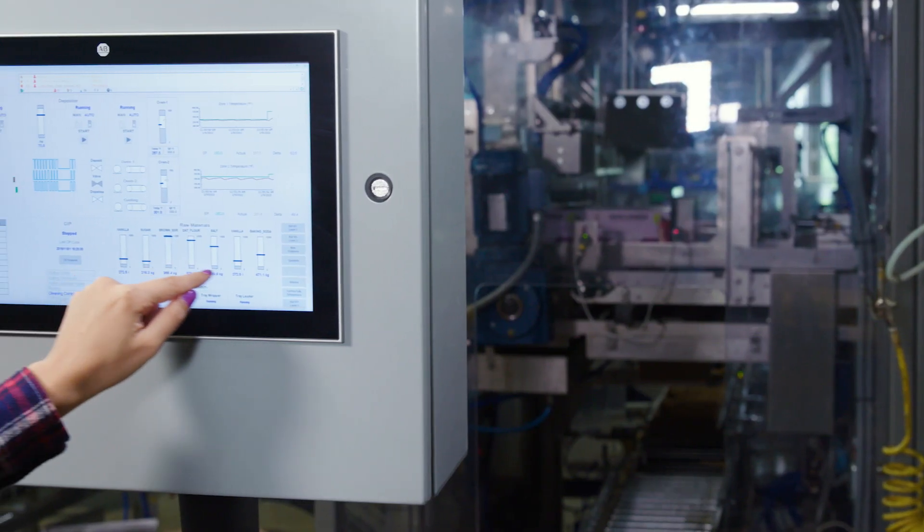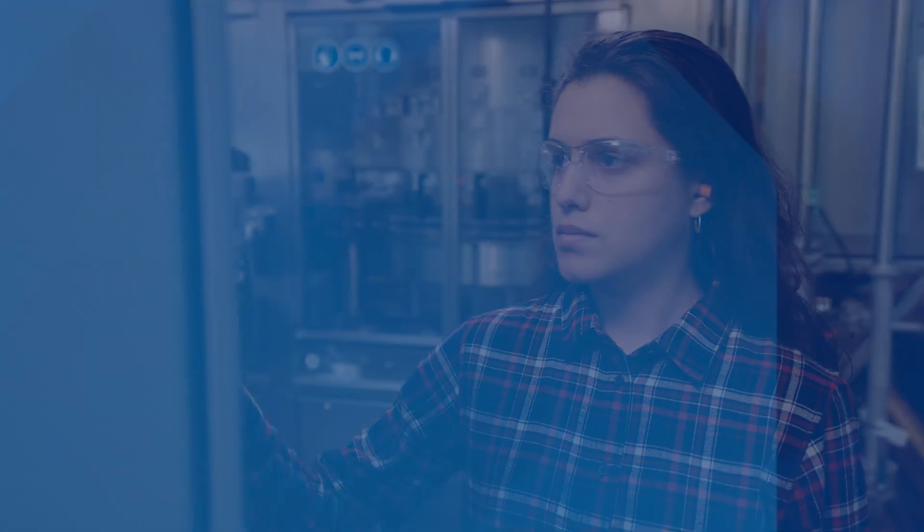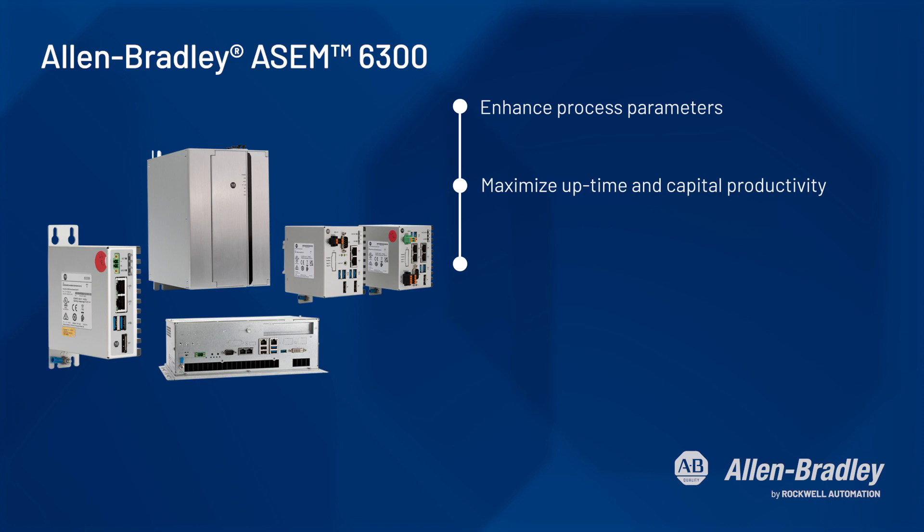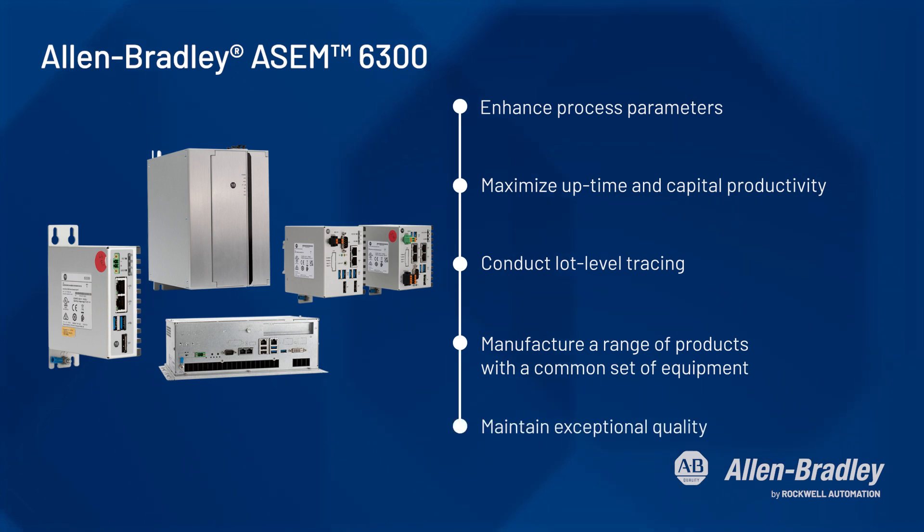The Awesome 6300 product line also helps you optimize your operations with better visibility. It allows you to enhance process parameters, maximize uptime and capital productivity, conduct lot level tracing, manufacture a range of products with a common set of equipment, and maintain exceptional quality.